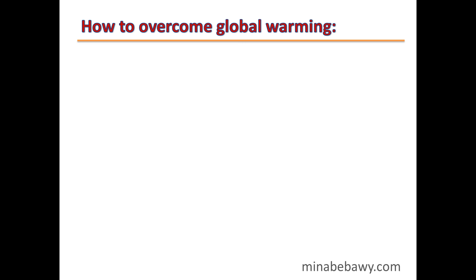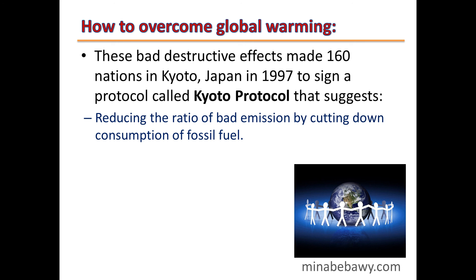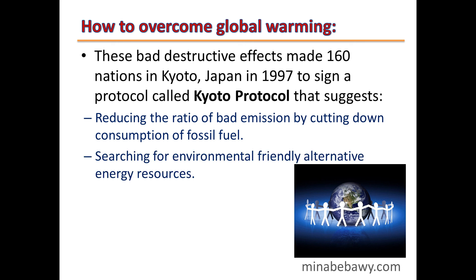How can we overcome global warming? These destructive effects led 160 nations in Kyoto, Japan in 1997 to sign the Kyoto Protocol, which suggests reducing the ratio of harmful emissions by cutting down consumption of fossil fuels, and searching for environmentally friendly alternative energy resources. This is the end of lesson two. Thanks for watching.